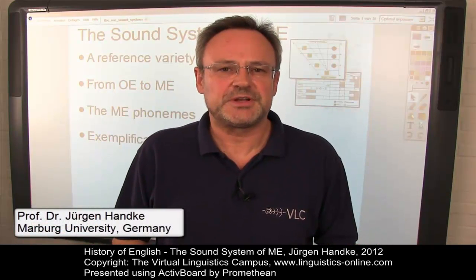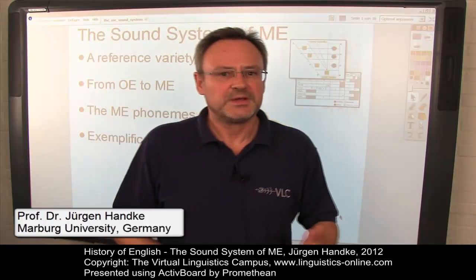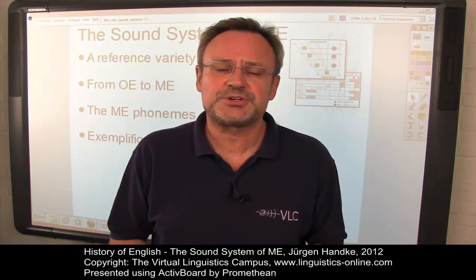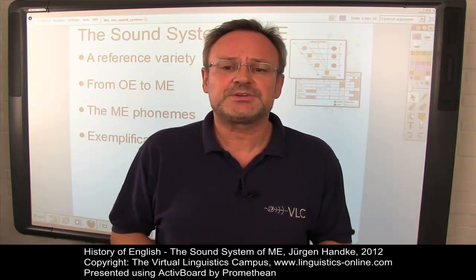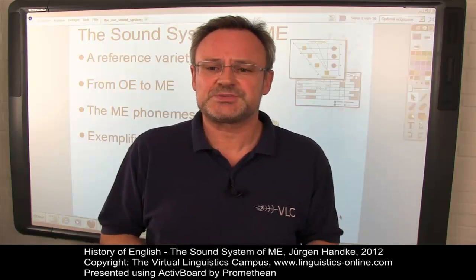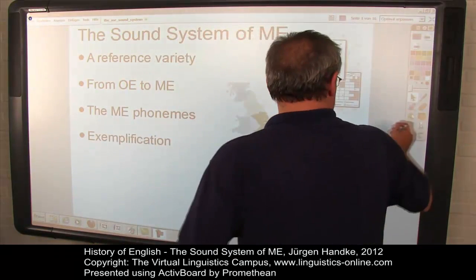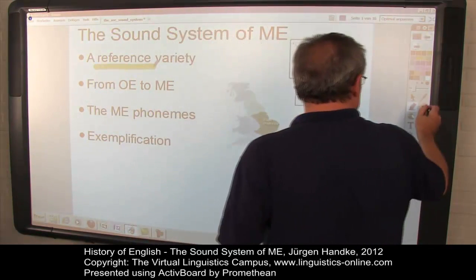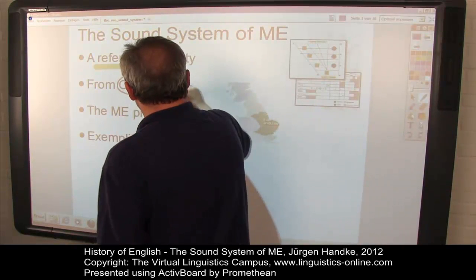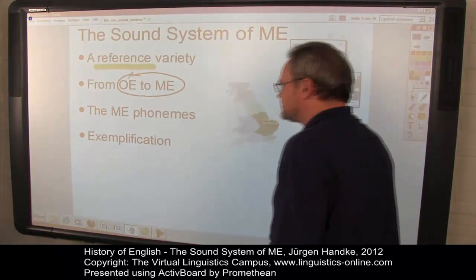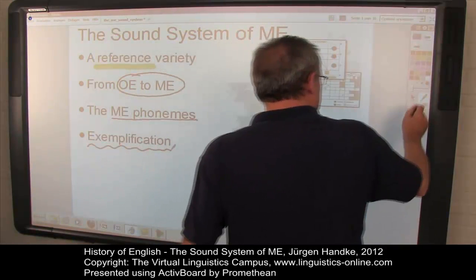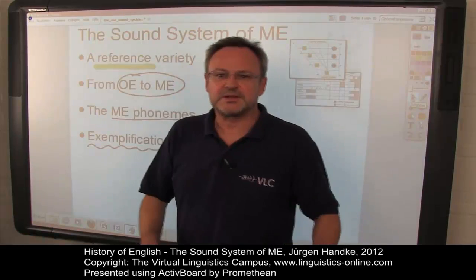Welcome back to our series of e-lectures about the history of English. This e-lecture discusses the sound inventory of Middle English, indicating the type of sound changes that led from Old English to Middle English and illustrating the pronunciation of Middle English using as many examples as possible. We will define a reference variety of Middle English, point out the major changes from Old English to Middle English, list and discuss the Middle English phonemes, and eventually exemplify Middle English on the basis of an excerpt from the Canterbury Tales.